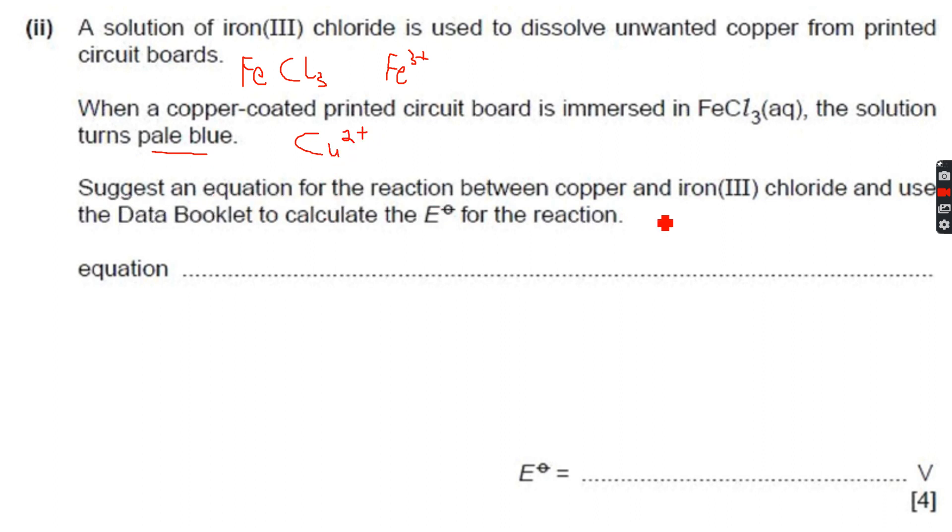Suggest an equation for the reaction between copper and iron(III) chloride and use the data booklet to calculate the E° for this reaction. So we have Fe³⁺, Cu, and Cu²⁺. The Fe³⁺ from iron chloride reacts with the copper-coated printed circuit, giving us Cu²⁺, which is the pale blue solution. These are the three species we have. When the copper printed circuit board is immersed in FeCl₃, it is oxidized to Cu²⁺.